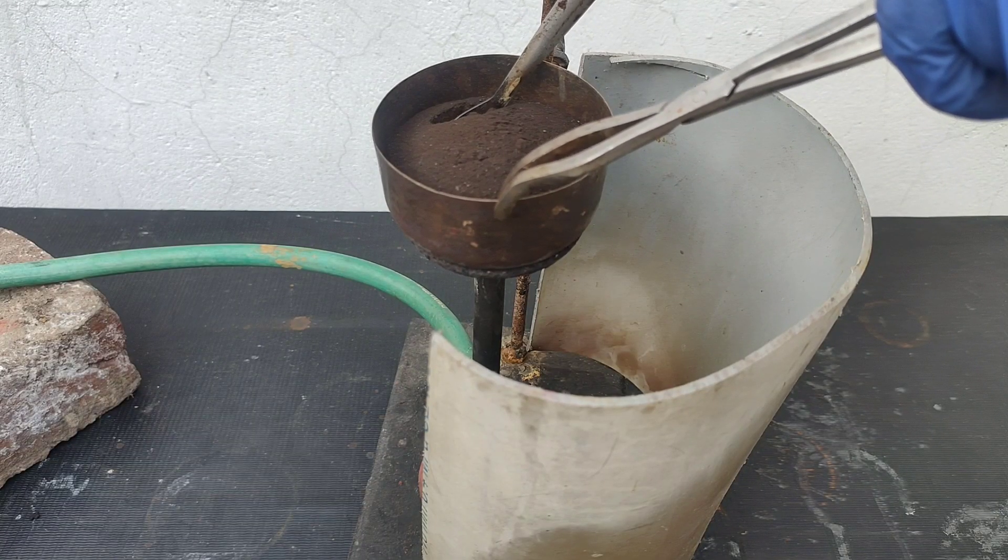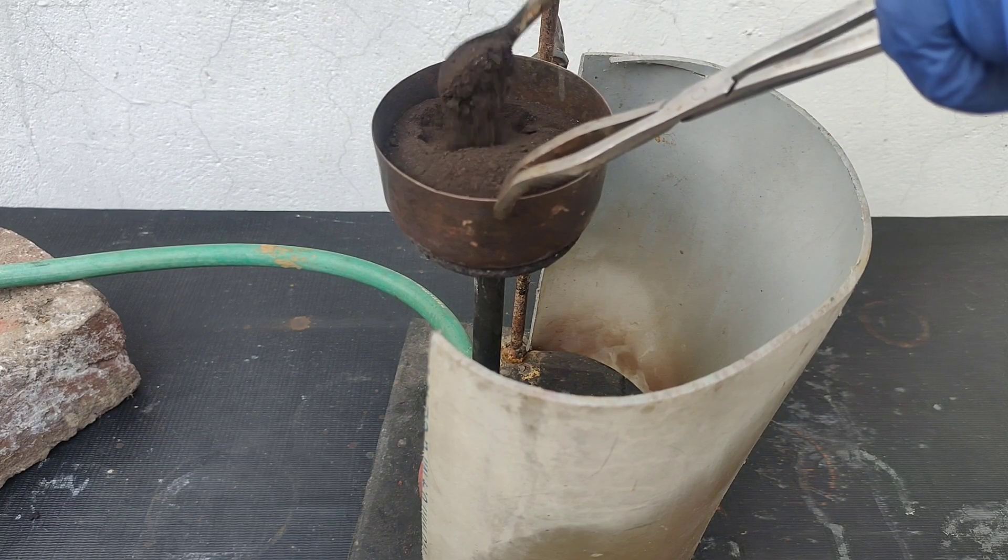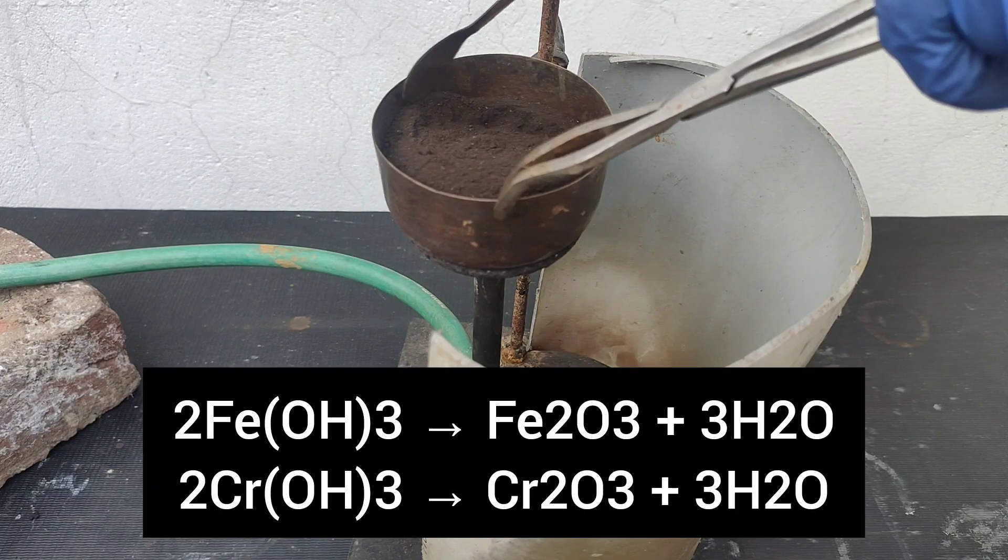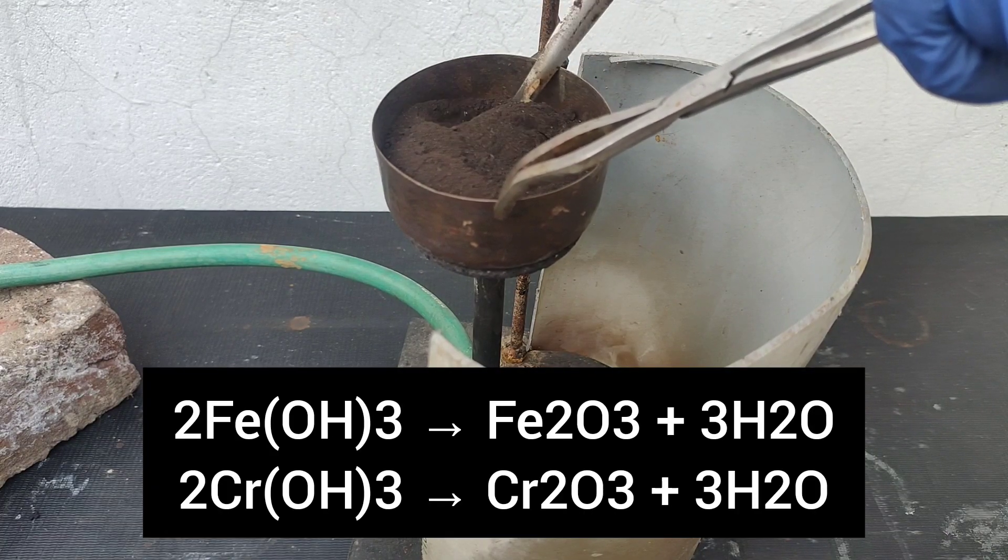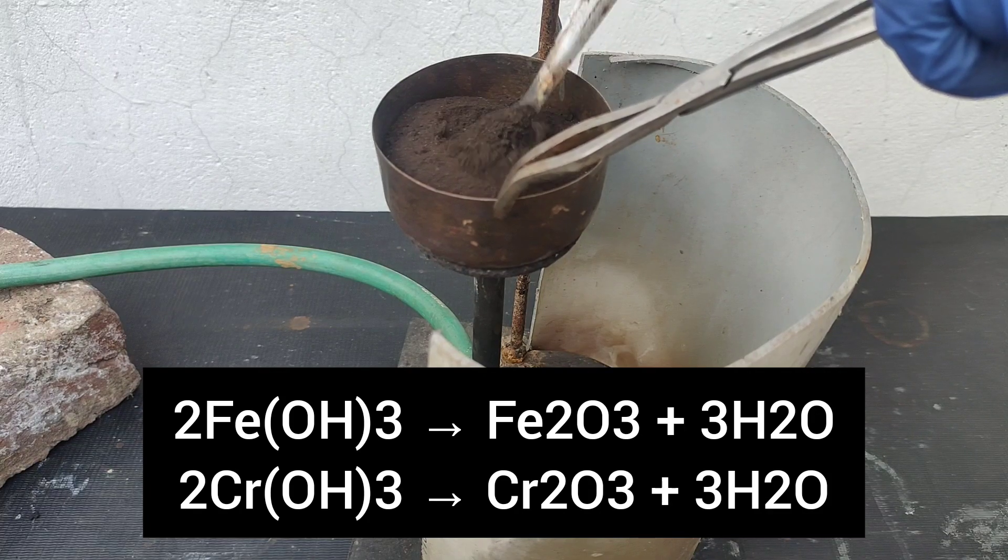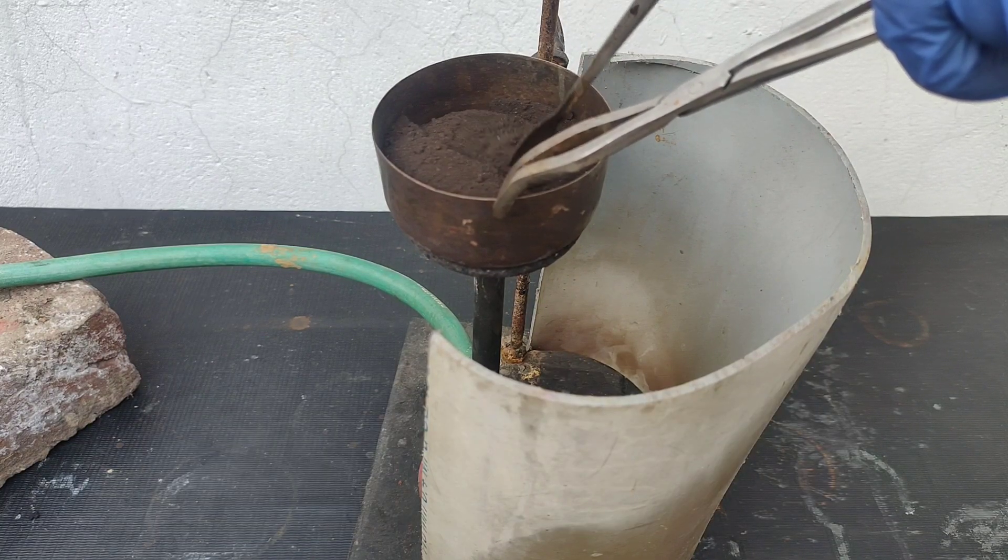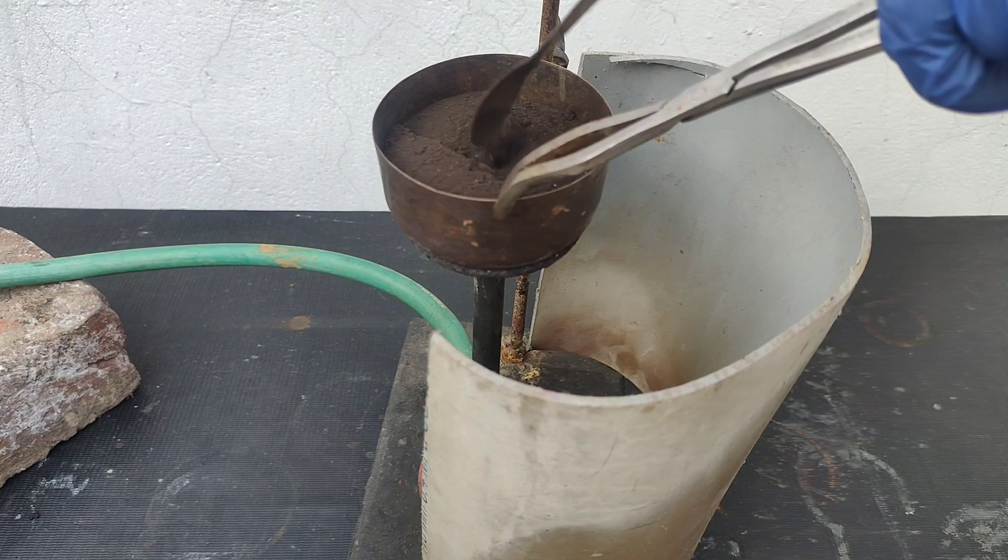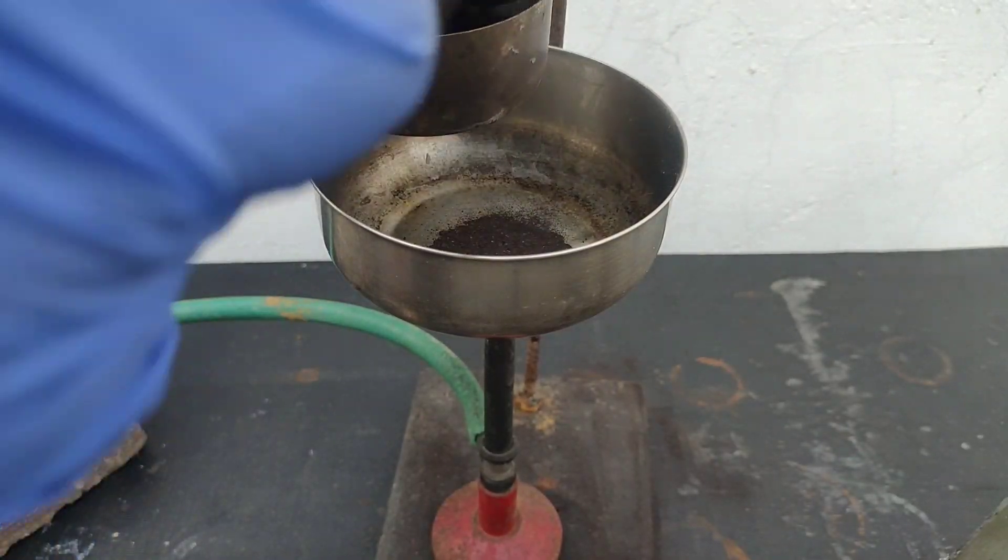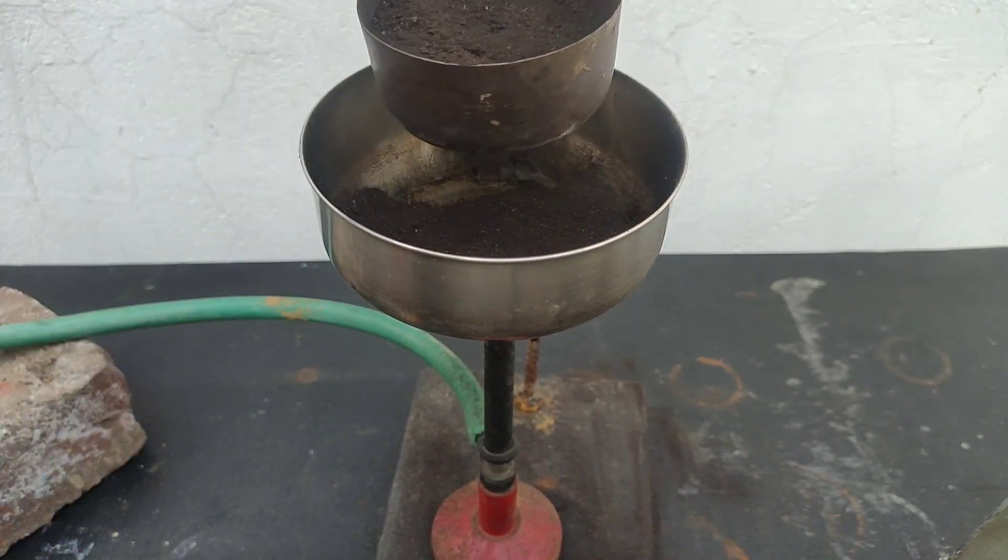I will be heating the powder on a Bunsen burner and stir it with a spatula. First the hydroxide will be converted into oxides. But I realized that the bowl was too small for this, so I transferred the powder into a bigger bowl and started heating.